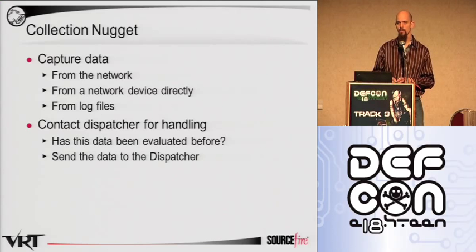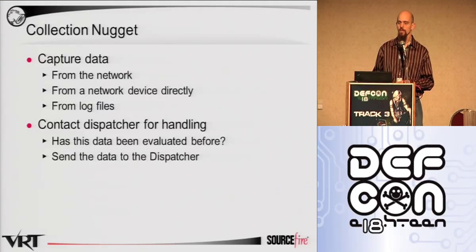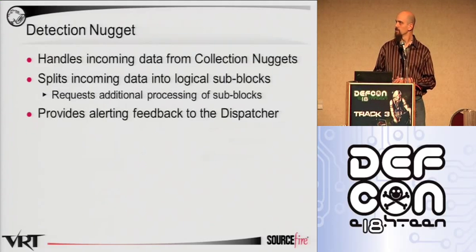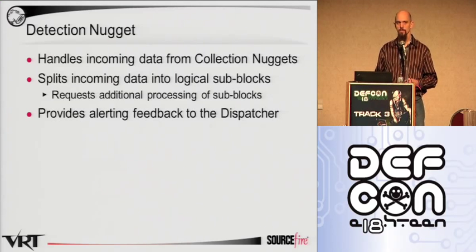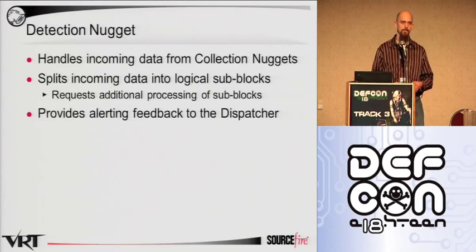When we talk to the dispatcher, we first check a local cache to make sure we don't have to send data through the network and take up extra time unnecessarily. If it's not in the local cache, we'll send it to the dispatcher, which will route it to the relevant detection nugget. Detection nugget can be a somewhat generic term — obviously there's data and attacks that you look for, but we also have a detection nugget that will simply take given data, split it into logical subcomponents, and send those back to the dispatcher for further analysis by specialized nuggets.